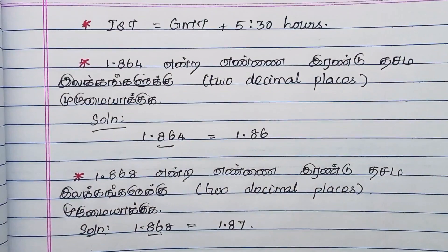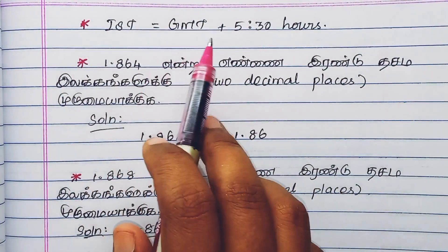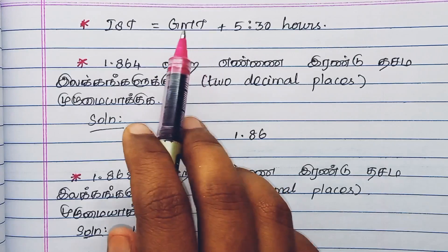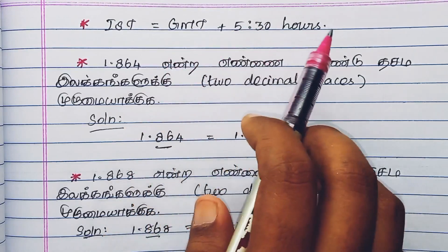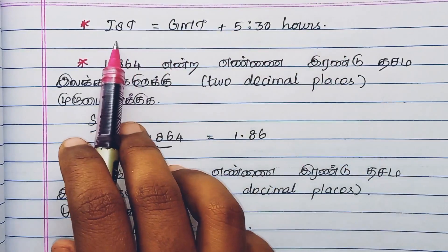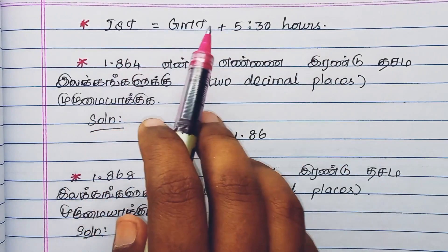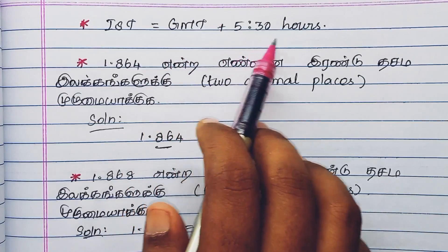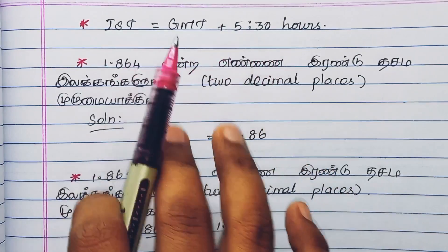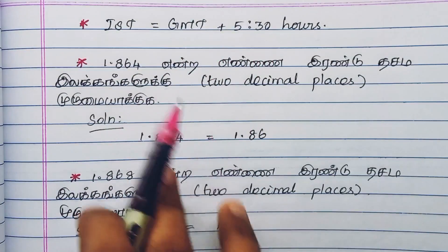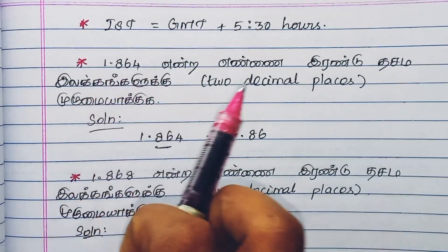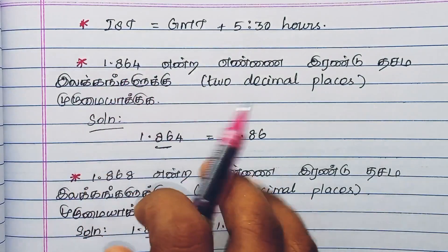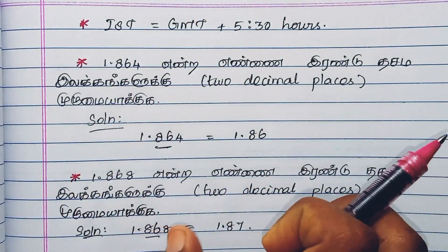How do we calculate IST? The GMT time is at 0 degrees. We add the Indian Standard Time offset. When GMT is at 100, in India we add the 5:30 difference. This gives an accurate and approximate Indian standard time.